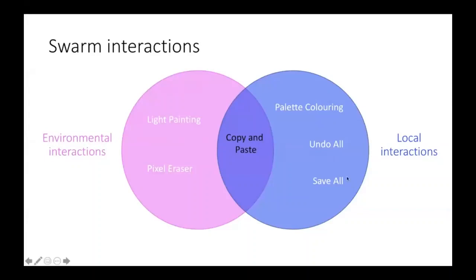Save all mode works the same way, but instead of a red wave it produces a purple or white wave depending on whether it's save or retrieve mode, and robots either save their current LED color or retrieve it. Copy and paste is a special mode because it uses both environmental and local interactions.